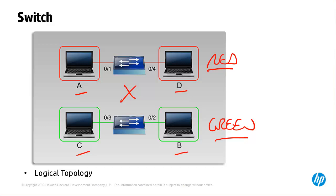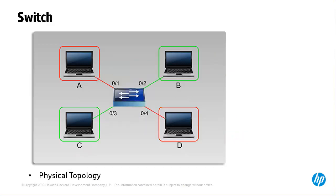VLANs are implemented at layer 2 of the OSI model, and the only way that one VLAN can communicate with another VLAN is via a layer 3 device such as a router. Each VLAN is a separate logical subnet or separate broadcast domain. Let's have a look at what happens when a broadcast is sent in a topology like this. For now, let's assume we have only one layer 2 switch with four devices: A and D on the red VLAN, and B and C on the green VLAN.